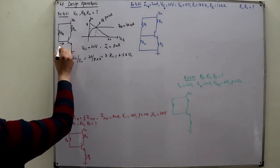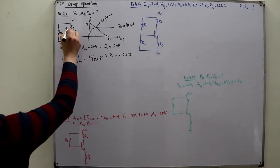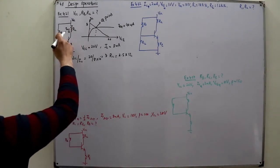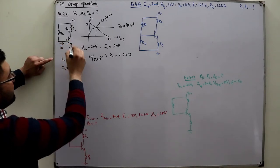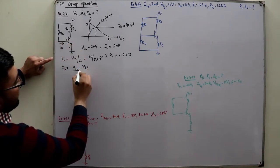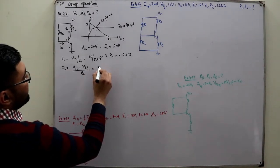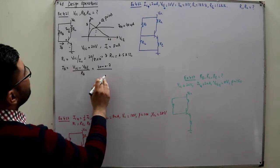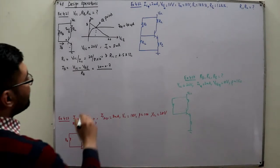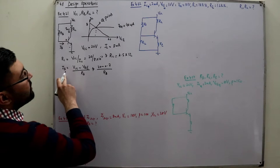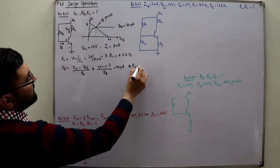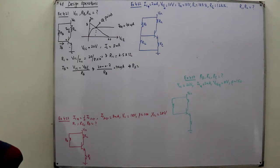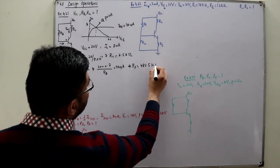Similarly, you can also find IB. IB is the current through RB, so you can write VCC minus VBE divided by RB. Putting down the values: 20 minus 0.7 divided by RB. RB is unknown, but IB is known — IB from here is 40 microamperes. So RB comes out to be 482.5 kilo ohms.